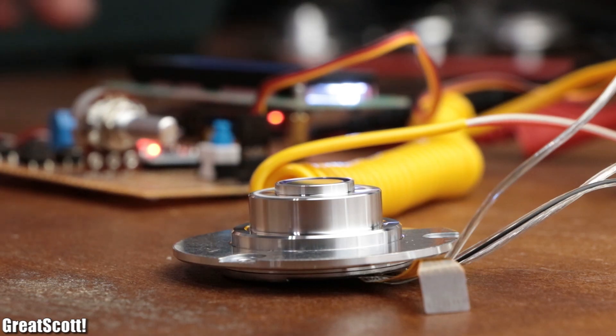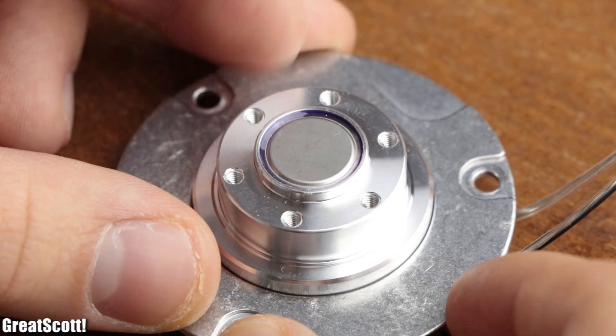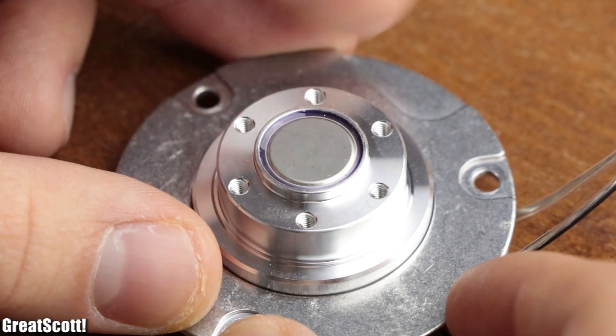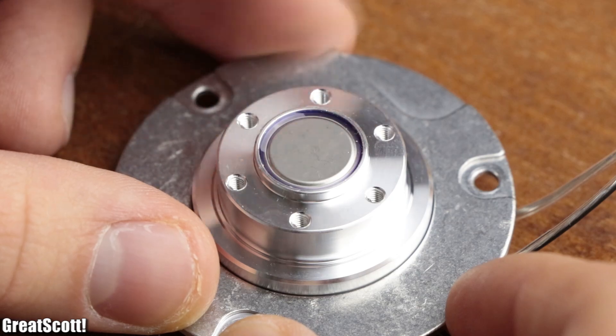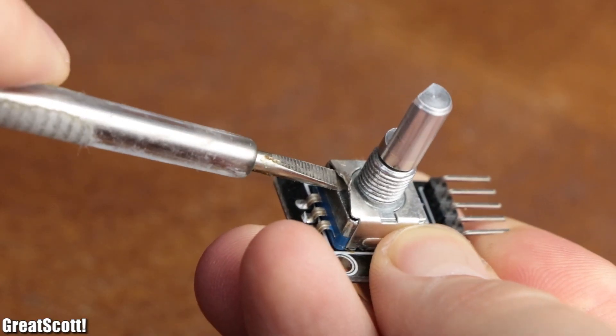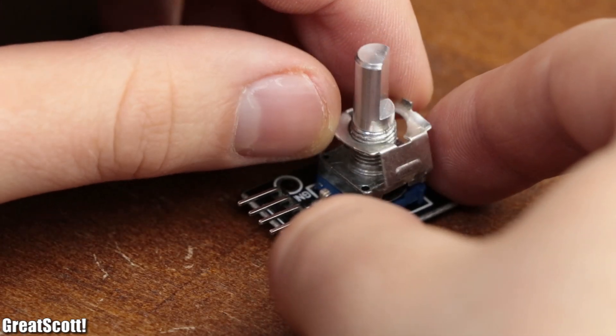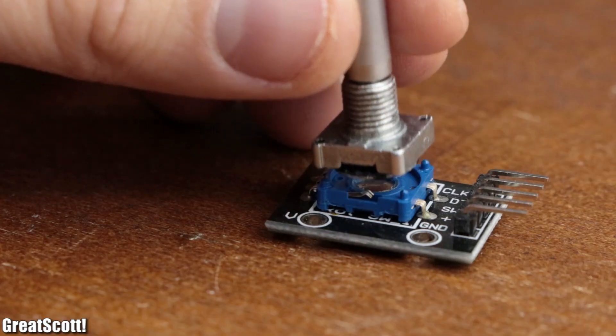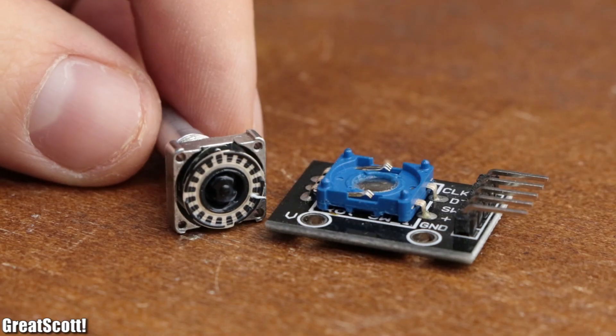But the main question still remains: how can we determine if it rotates clockwise or anti-clockwise? To find a possible solution, let's crack open an incremental rotary encoder to understand how it works.